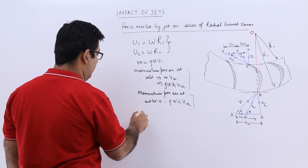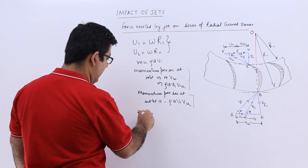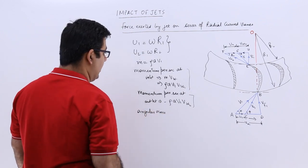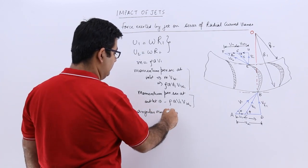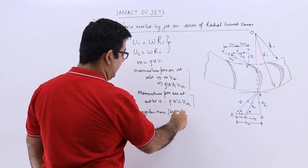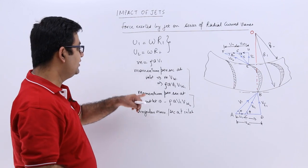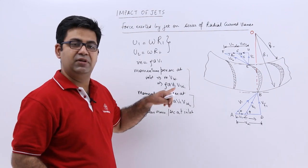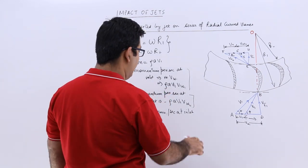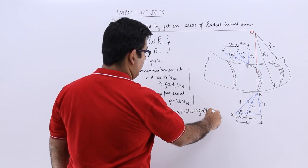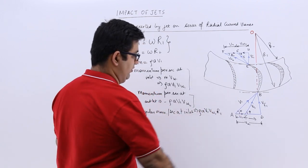Now, let us find out the angular momentum. The angular momentum per second at inlet, I will have to multiply this particular value with the radius. So I will have ρAv1vw1 into r1.